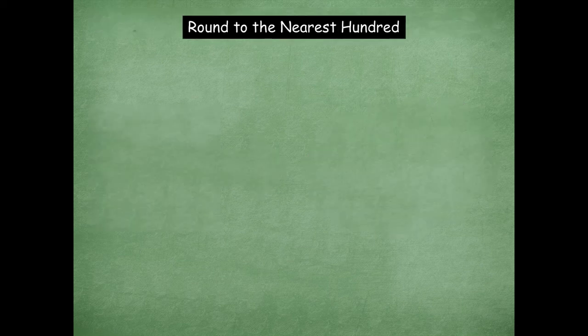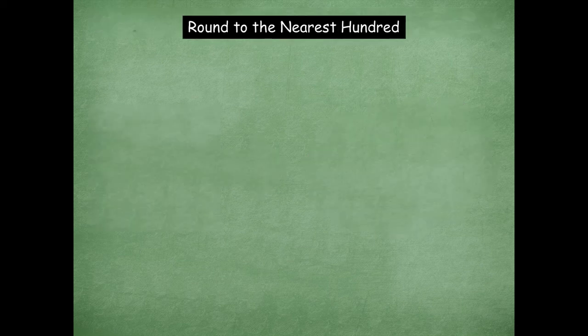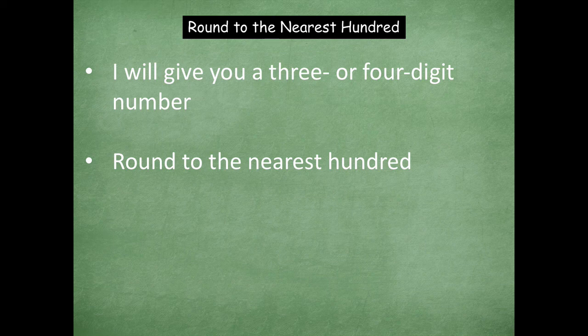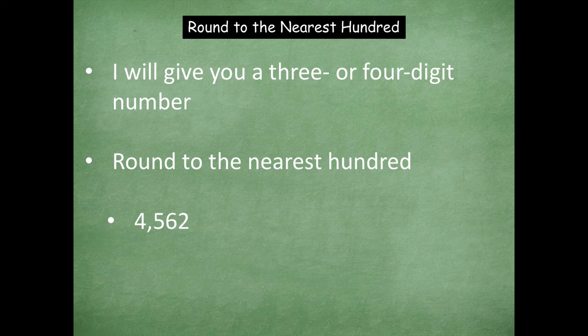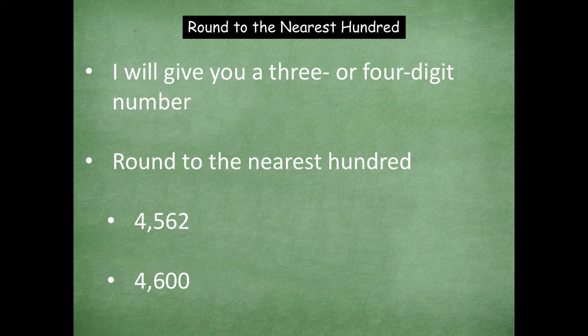Now we're going to go into reviewing rounding to the nearest hundred. I'll give you a three or four digit number. You're going to round to the nearest hundred. For example, if we had 4562 and you round that to the nearest hundred, what would be the correct answer? What do you guys think? If you said 4600, you got it.